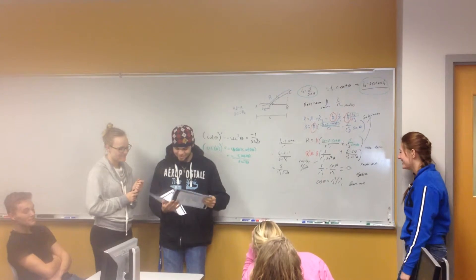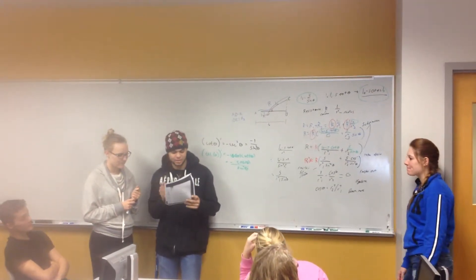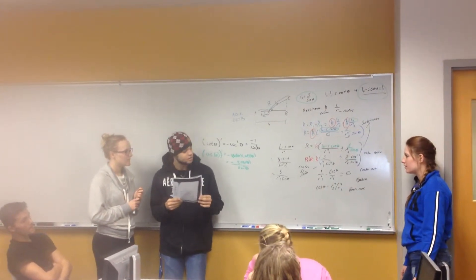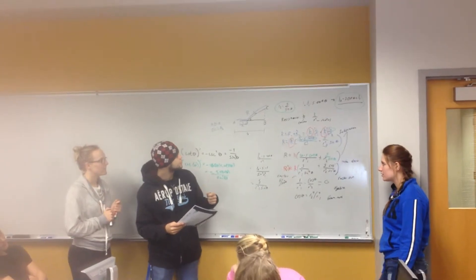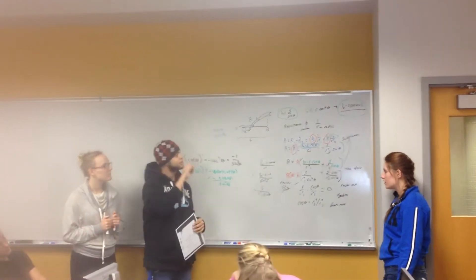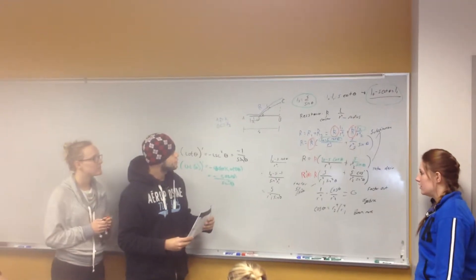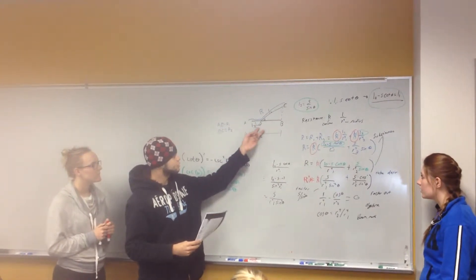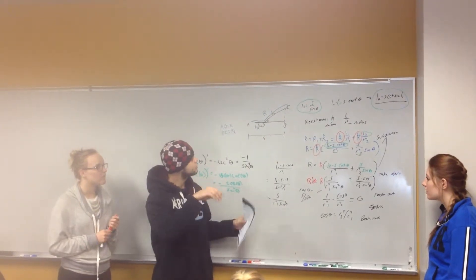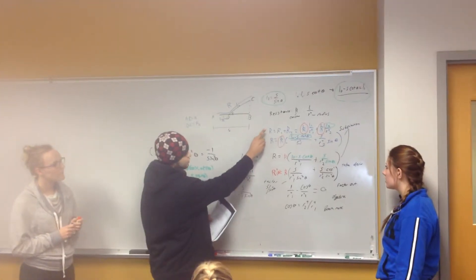So in the problem, they said that we had to find the resistance and the best angle for blood vessels to branch off at. They gave us the formula for the entire resistance to be this section plus this section. That's supposed to represent blood vessels branching off. They named the section AD to be R sub 1 and then D to C to be R sub 2, and when you add the two together you get total resistance. That's this equation right here.